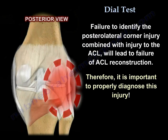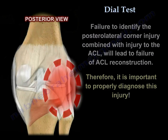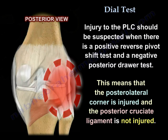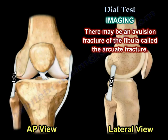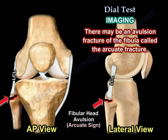It is important to properly diagnose this injury. Injury to the posterolateral corner should be suspected when there is a positive reverse pivot shift test and a negative posterior drawer test — meaning the posterolateral corner is injured but the posterior cruciate ligament is not. On imaging, you may find an avulsion fracture of the fibula called the arcuate fracture.